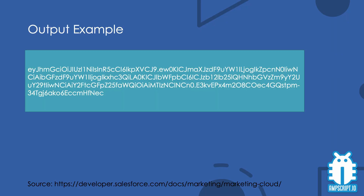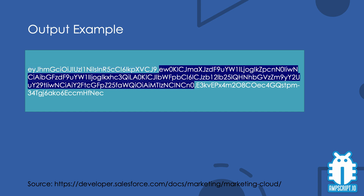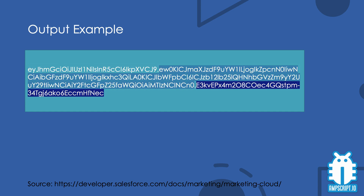The output of the getJSONWebToken functions is an encoded JSON Web Token string, which consists of three parts: a header, a payload, and a signature.